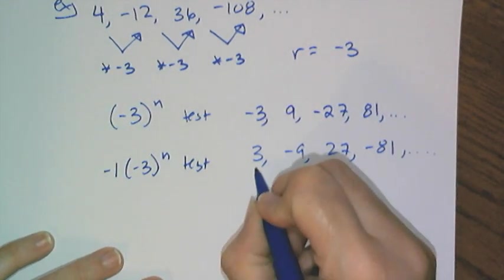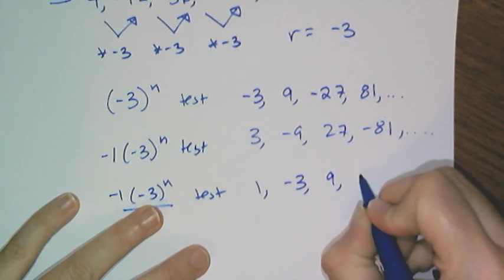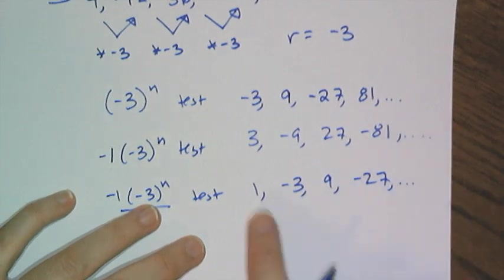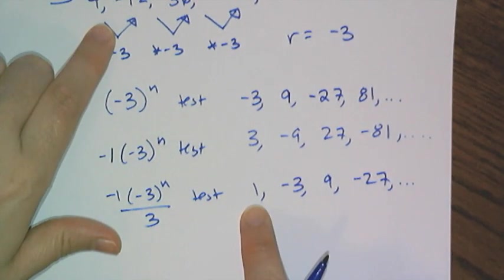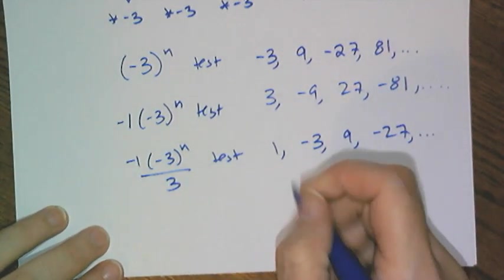So if I divide this sequence by 3, I get a 1, a negative 3, a 9, and then a negative 27. And now, it's really easy to turn a 1 into a 4, right? All I have to do is multiply it by 4.